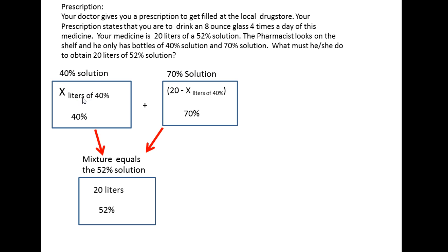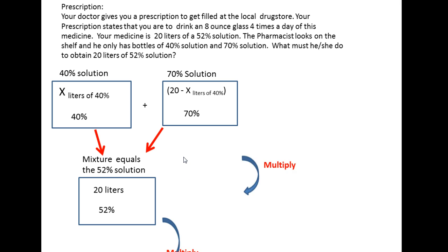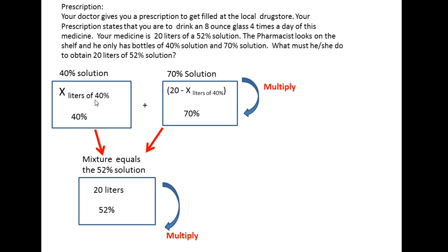How much of the 40 percent solution are we supposed to pour out? We don't know, so we'll call that x — x liters of 40 percent solution. We're going to mix that with some amount of the 70 percent solution, which we also don't know. But we do know that the result of the mixture will be 20 liters. So if we subtract x from 20, that gives us the amount of 70 percent solution we're adding: (20 - x) liters.